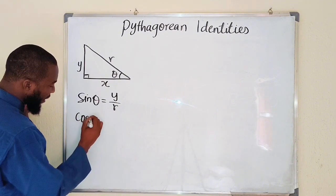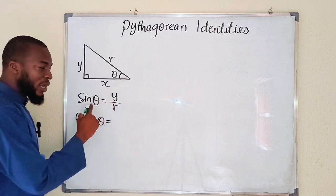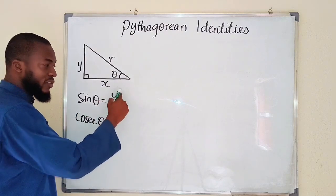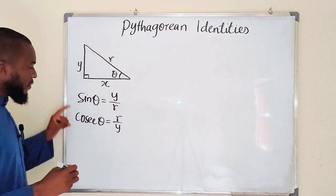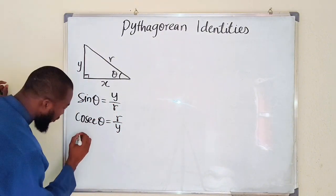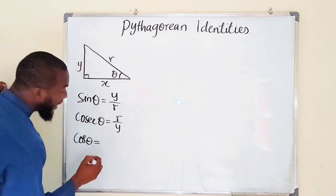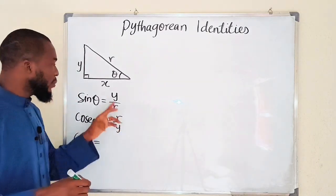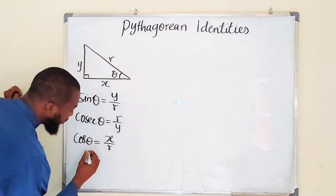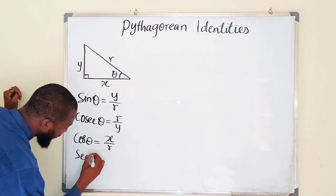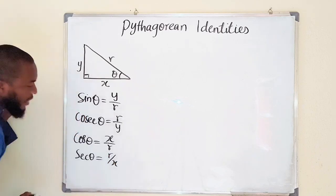Cosecant theta is the reciprocal of sine, so just take the reciprocal, which is r divided by y. That is the first two. Then we have cosine — cosine theta is adjacent divided by the hypotenuse, which is x divided by r. Its reciprocal is secant, which is r divided by x.